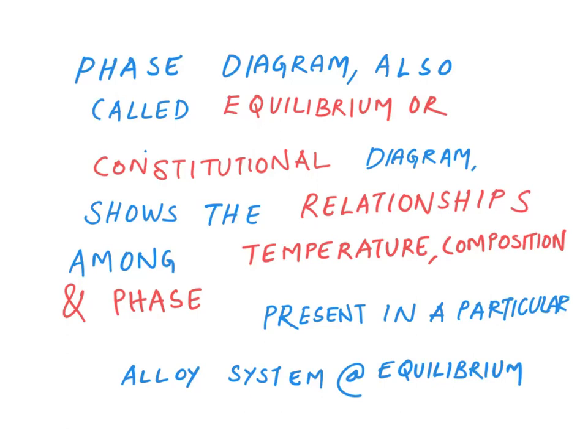So keep these three things in mind: it gives us the relationship among temperature, composition, and phase. In the next lectures we will look into a few examples of phase diagrams like maybe a nickel-copper system.